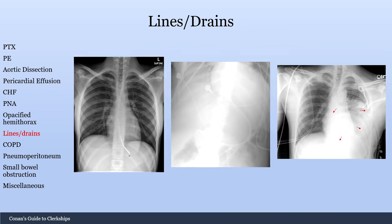This picture depicts an NG tube terminating past the gastroesophageal junction — that is exactly where you want to see it. A few things that could go wrong include the tube going into the trachea, tracking down the trachea and coiling up in the lung. You need to get the X-ray to make sure that's not happening, because starting tube feeds with an NG tube in the lung would cause a massive pneumonia.